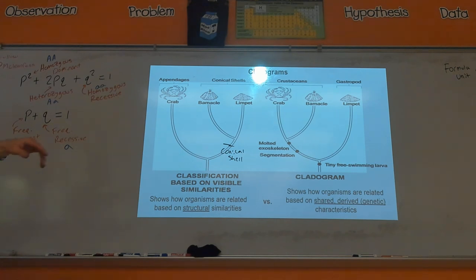So the crab would be the outgroup of the barnacle and the limpet. But let's say I'm now looking at it from the frame of, well, what about segmentation? Well now segmentation, having like joints and stuff, the crab and the barnacle they both have segmentation. The limpet now would be the outgroup and no longer the crab. So these trees can change depending on what you tend to focus on.